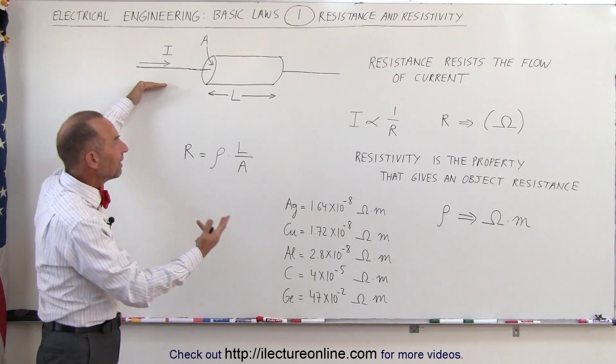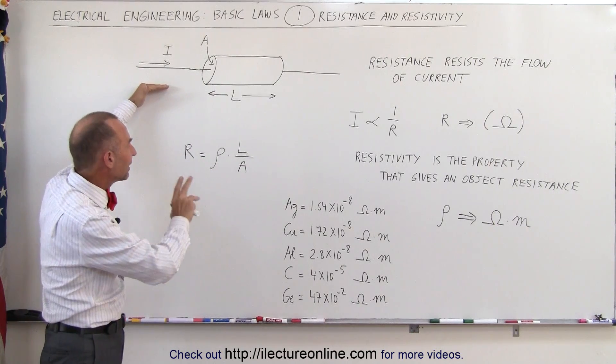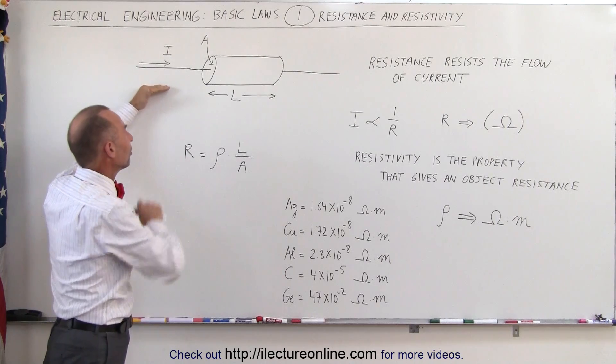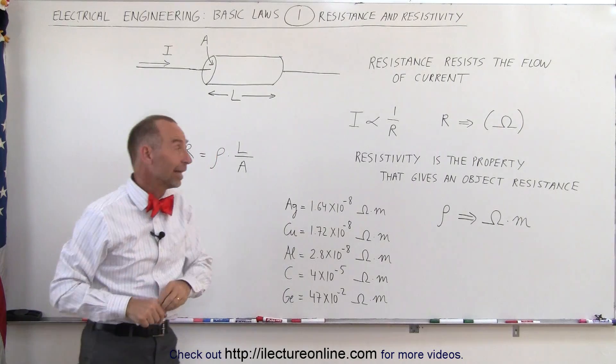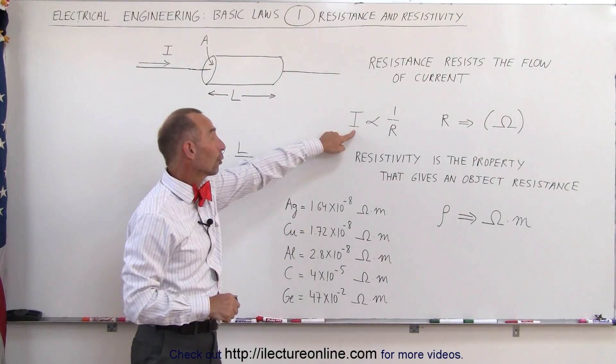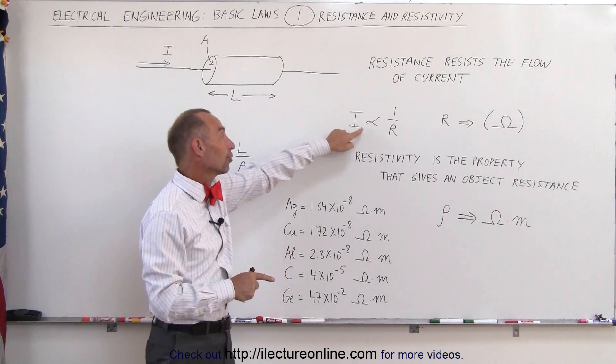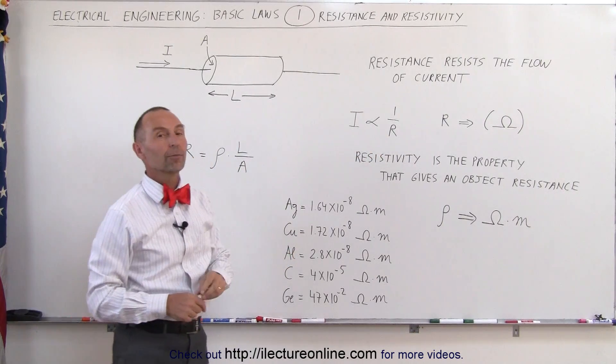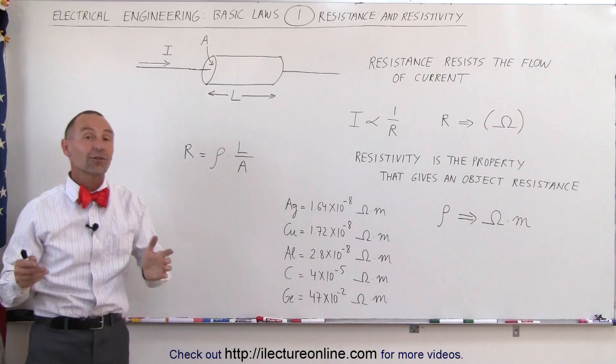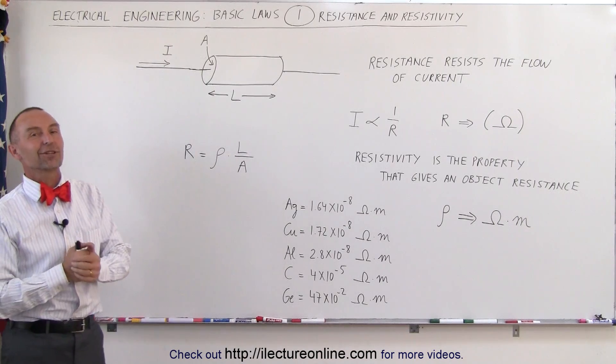Notice resistivity is the property that gives objects their resistance. Resistance is what gives opposition to current flow in circuits. Therefore, current is inversely proportional to the resistance. Increase the resistance, you will diminish the current proportionally. And that's the start of this new section on electrical engineering.